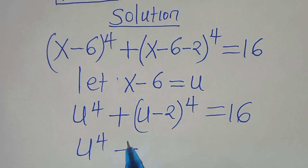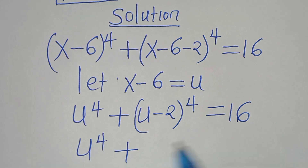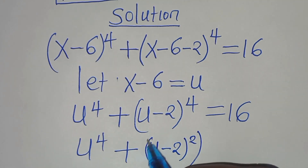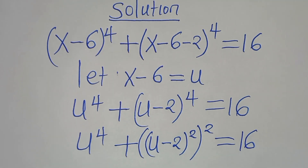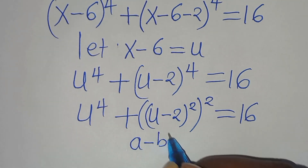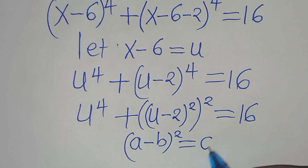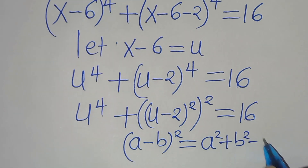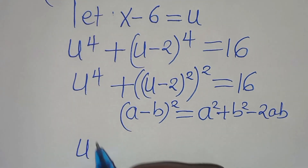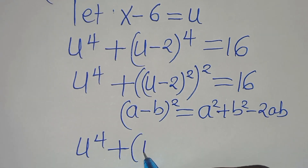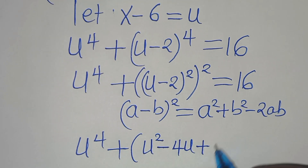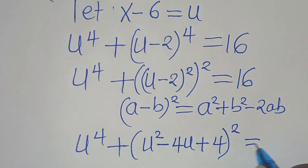We have u to the power of 4, plus we can express u minus 2 to the power of 4 as u minus 2 to the power of 2, raised to the power of 2, equal to 16. Now, u minus 2 to the power of 2 can be expressed as a squared plus b squared minus 2ab. Applying this algebraic identity, we have u to the power of 4, plus u squared minus 4u plus 4, everything raised to the power of 2, equal to 16.